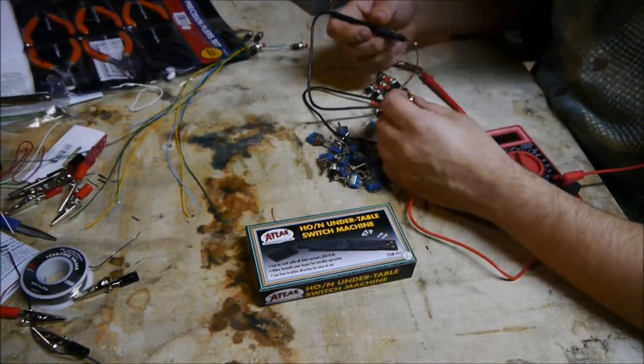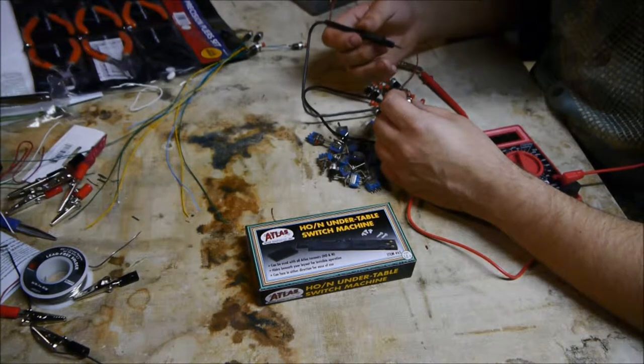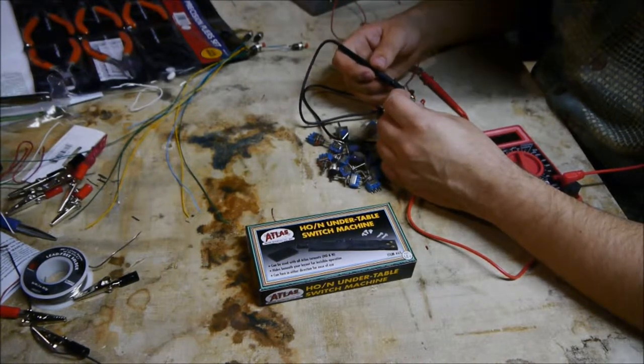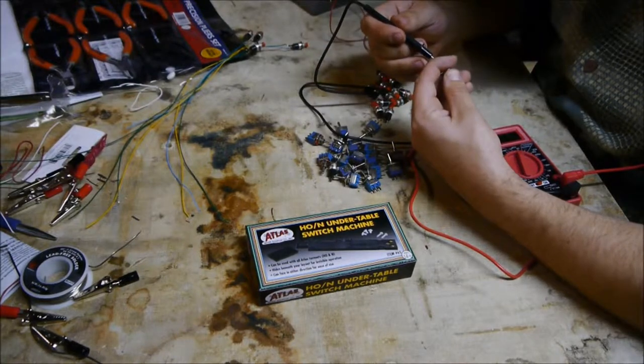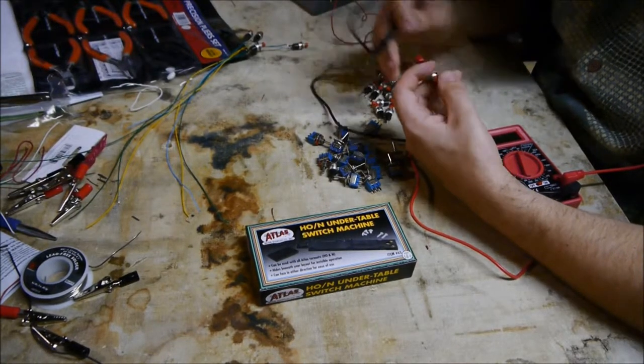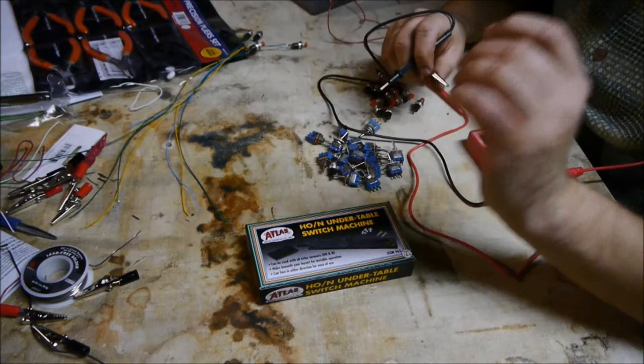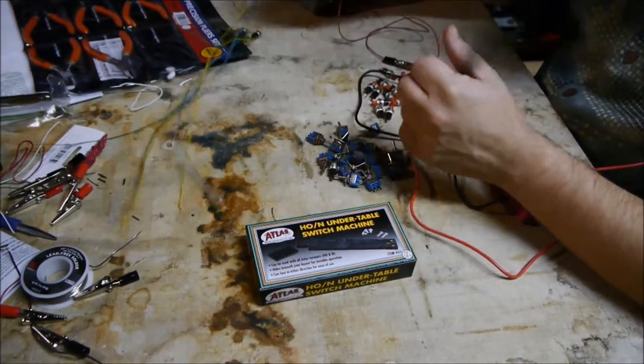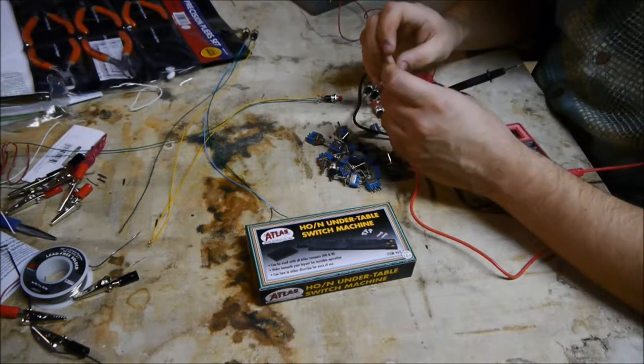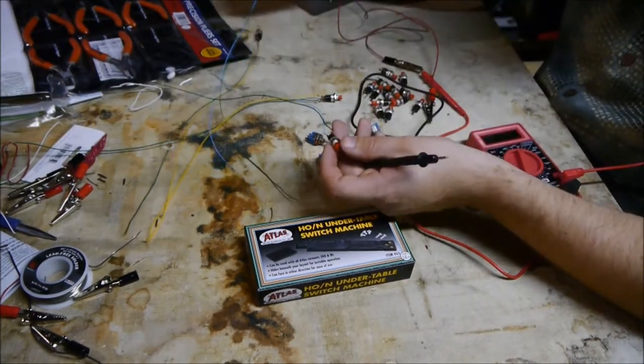So this is a momentary contact switch, and it's going to off. It's normally off. So I'm going to touch here, and I should get zero for my reading. And I'll hold the switch down and touch here, and I should get 17 and a half volts, and I do. So I know that this switch is good.